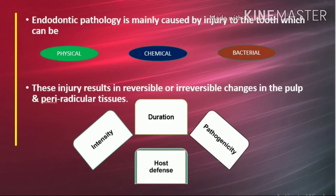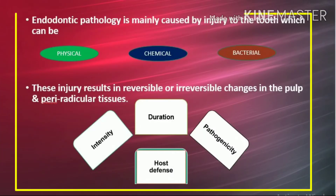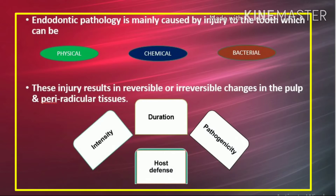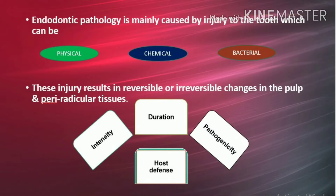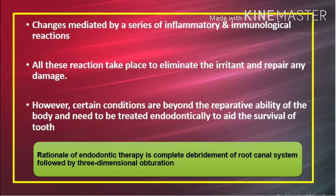Endodontic pathology is mainly caused by injury to the tooth, which can be physical, chemical, or bacterial. These injuries result in reversible or irreversible changes in the pulp and periradicular tissues. It depends upon the intensity, duration, and pathogenicity of injury and host defense, resulting in changes mediated by a series of inflammatory and immunological reactions. All these reactions take place to eliminate the irritant and repair any damage.